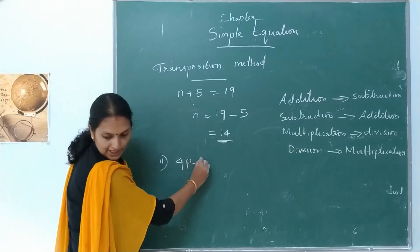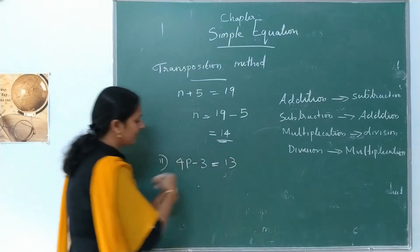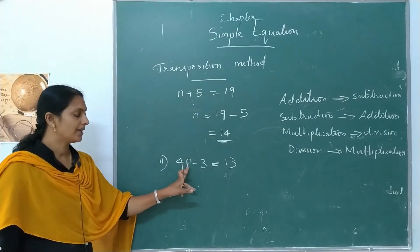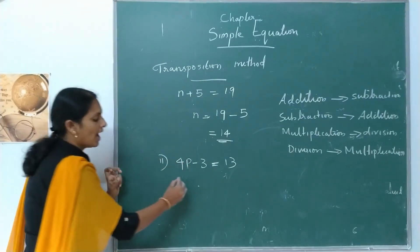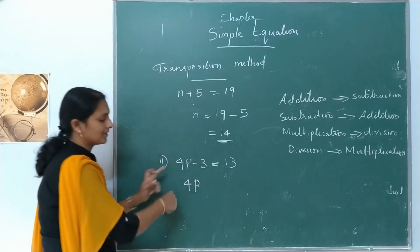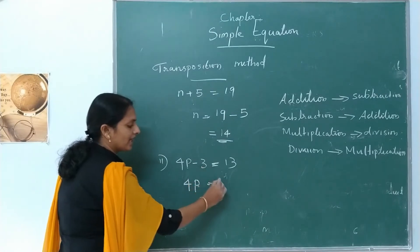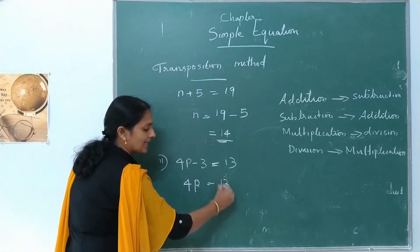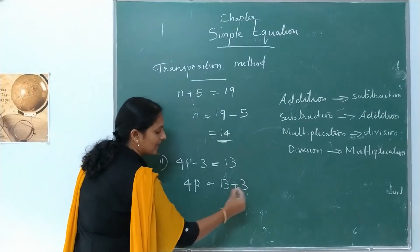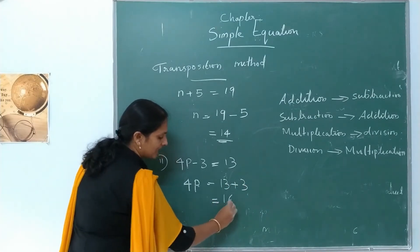Another example: 4P minus 3 is equal to 13. Here, 4P will stand on the LHS. Transpose negative 3 to the RHS — it becomes positive 3. So 4P is equal to 13 plus 3, that is equal to 16.